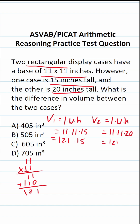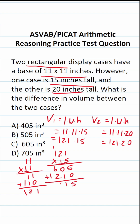So now we have 121 times 15. 1 times 5 is 5. 2 times 5 is 10, so bring down a 0 and carry the 1. 1 times 5 is 5, plus 1 is 6. Before you start multiplication with that 1, bring in a 0 placeholder. 1 times 1 is 1, 1 times 2 is 2, 1 times 1 is 1. Add this up: 5, 1, 8, 1. So its volume is going to be 1815.